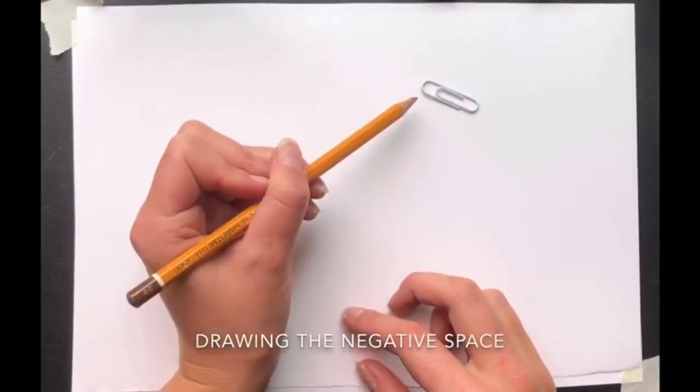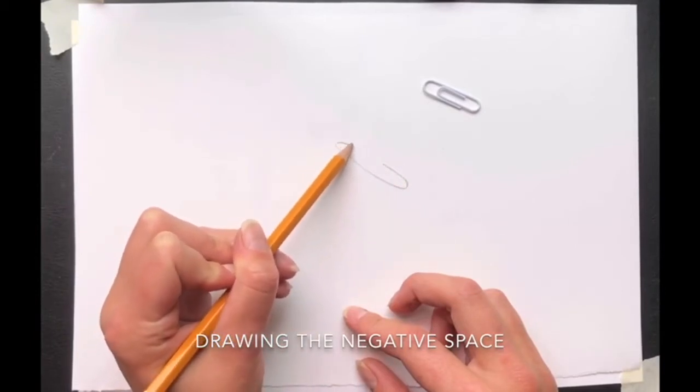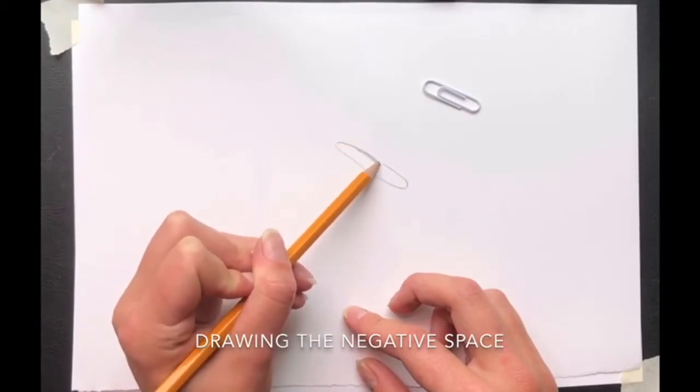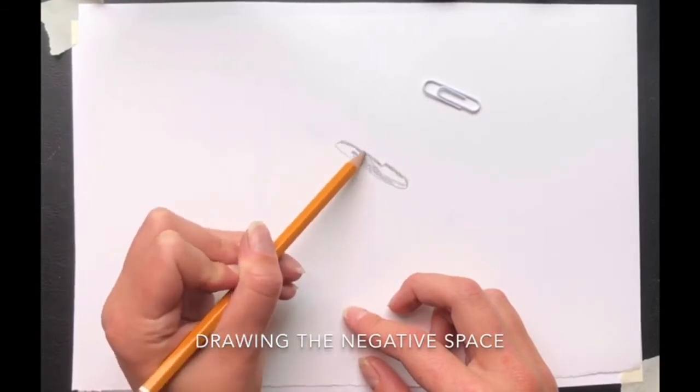Hi everyone, so the first one I'm going to talk about is negative space. Simply put, the meaning of negative space is the area around and between an object.